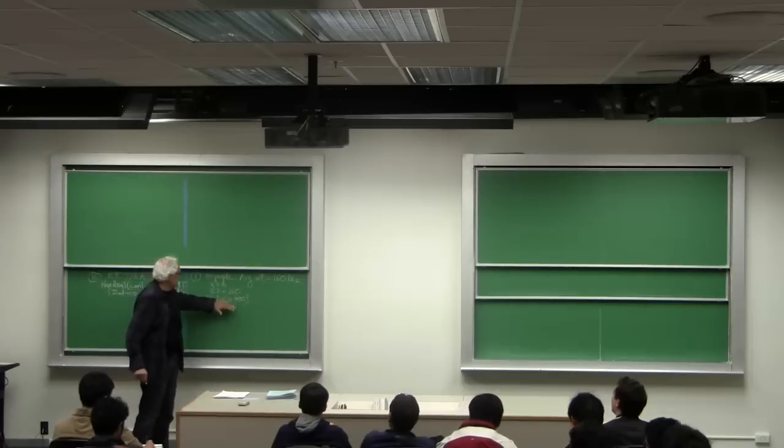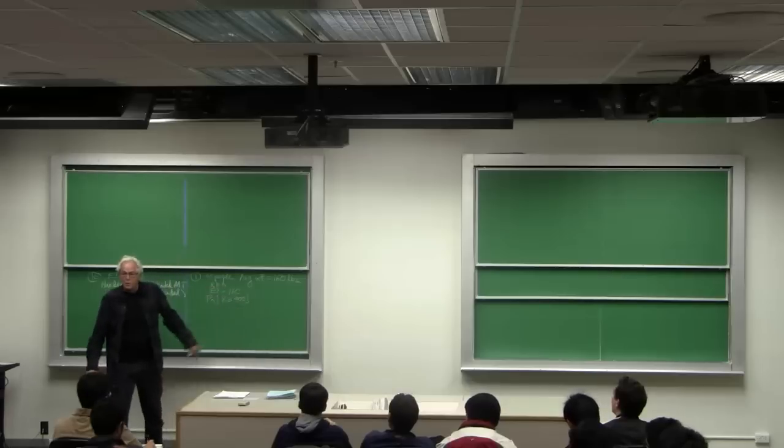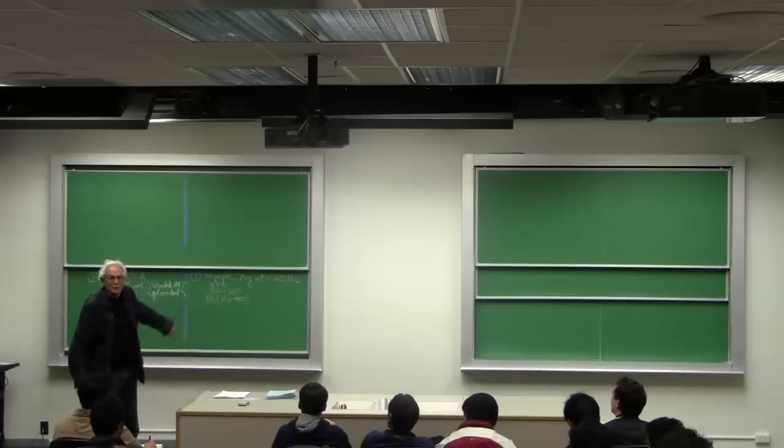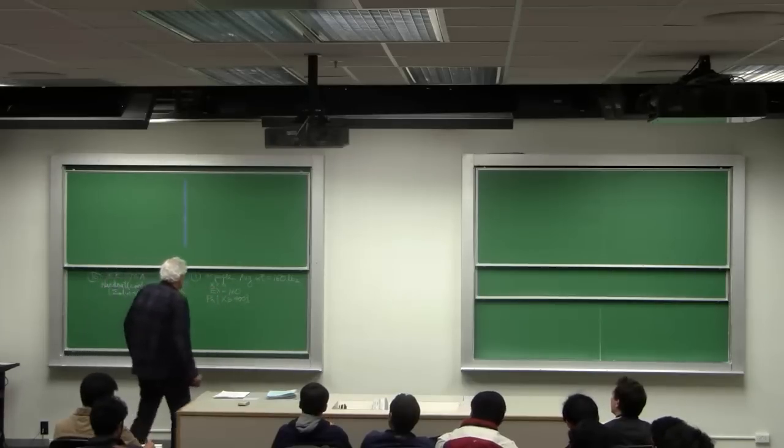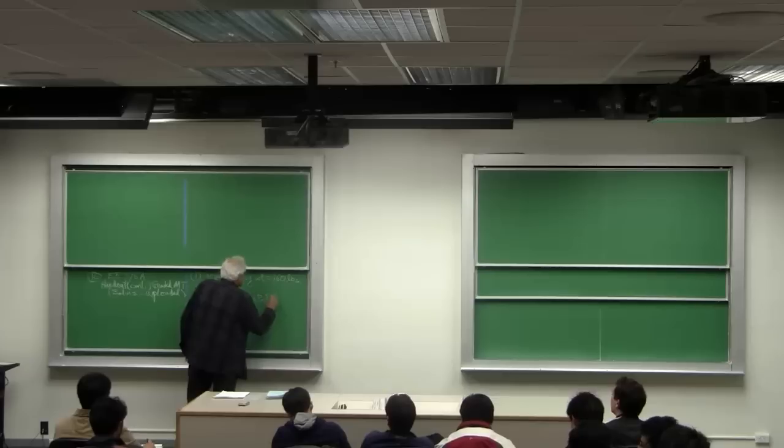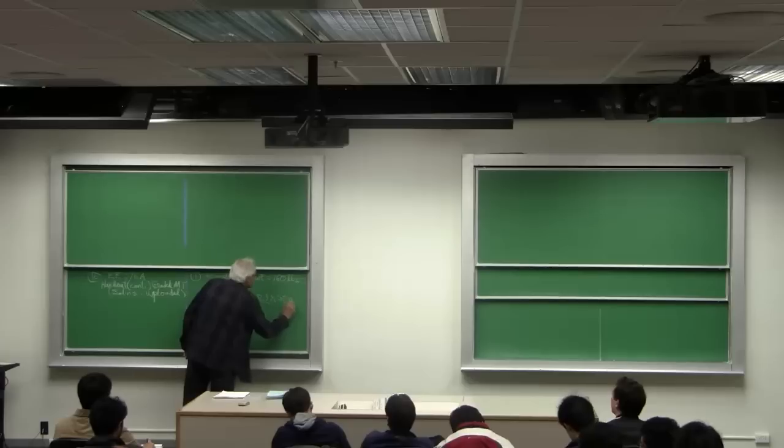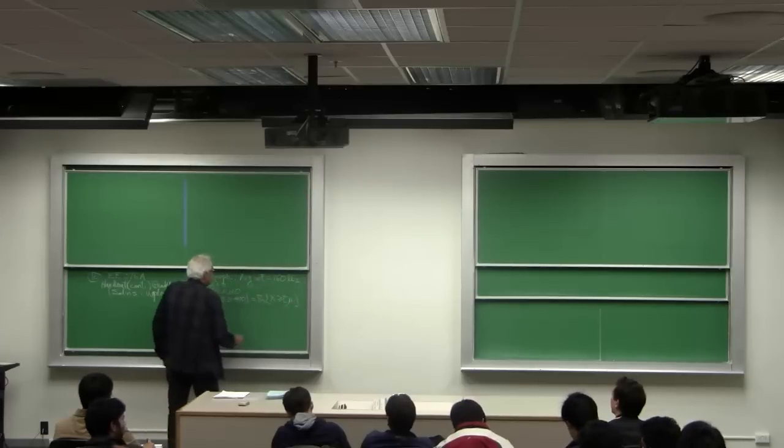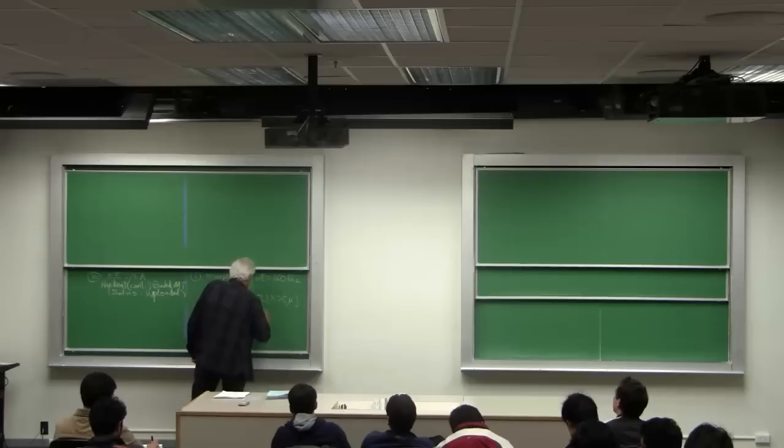Now this isn't well defined until we give the actual distribution, but what's the maximum this could be? I can write this as the probability that x exceeds t times its mean mu, and that's less than or equal to 1 over t.